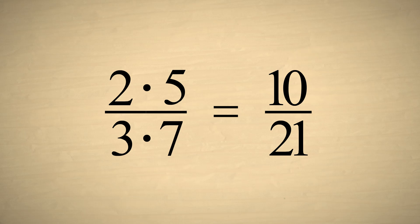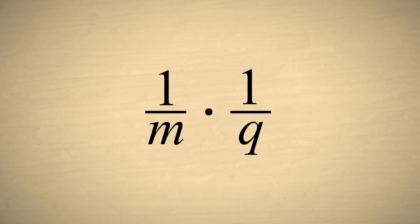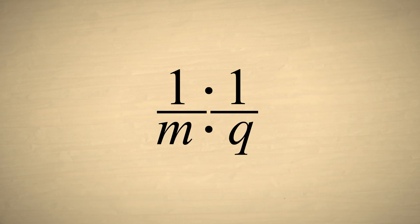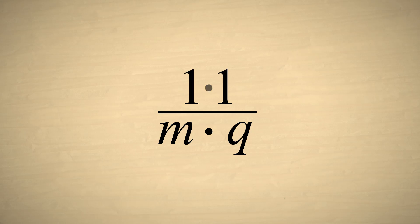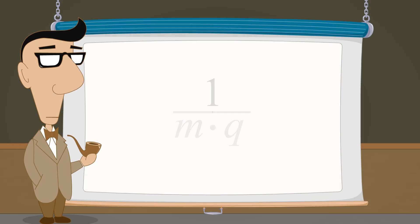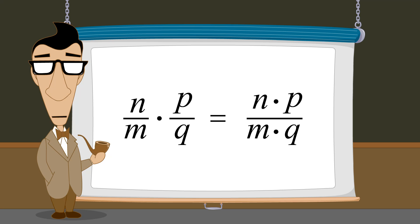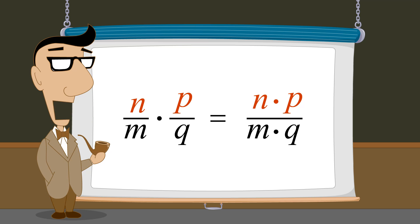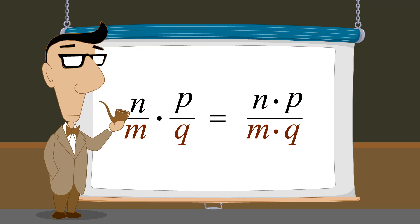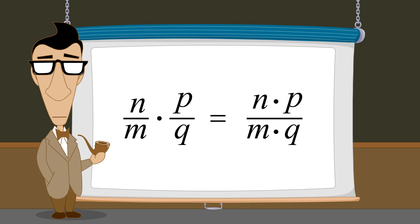This rule works for any type of fraction. If the fractions are unit fractions, multiplying the numerators and the denominators still gives us the correct result. So multiplying fractions is simple: we multiply the numerators and the denominators. In the next lecture, we will see how to divide fractions.